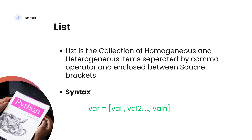First, this is the definition of list. A list is a collection of homogeneous and heterogeneous data items separated by a comma operator and enclosed between square brackets. Homogeneous and heterogeneous values are separated by comma, and the list is enclosed in square brackets.